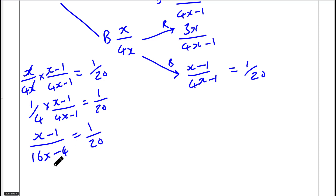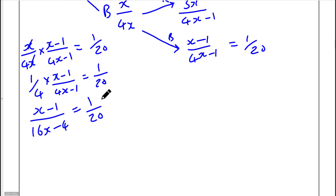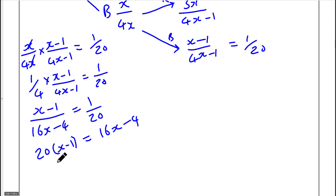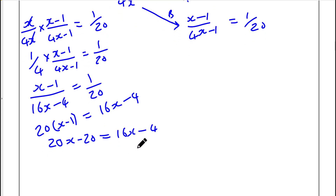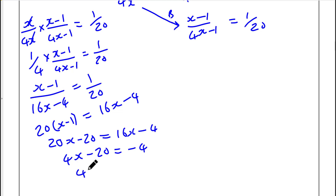Let's cross-multiply — that's probably easier and quicker. 1 times 16x minus 4 gives us the right side, so we get 20x minus 20 equals 16x minus 4. Subtracting 16x from both sides gives 4x minus 20 equals minus 4. Adding 20 gives 4x equals 16, so x equals 4.